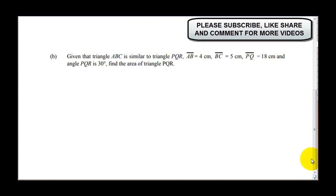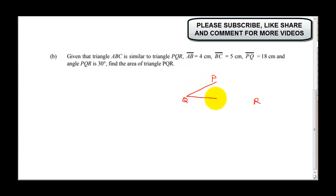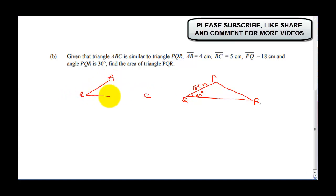The next question, 5b, says: given that triangle ABC is similar to triangle PQR, AB is 4 cm, BC is 5 cm, PQ is 18 cm, and angle PQR is 30 degrees — find the area of triangle PQR. To solve this, we sketch the diagram. PQR has angle PQR of 30 degrees and PQ of 18 cm. Triangle ABC looks similar, so angle B is also 30 degrees, AB is 4 cm, and BC is 5 cm.